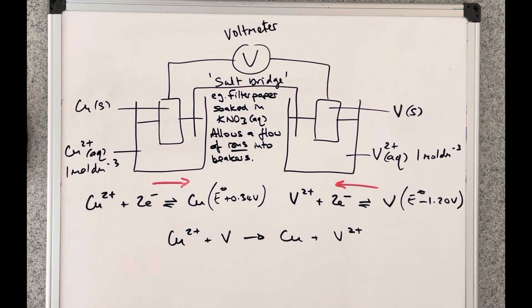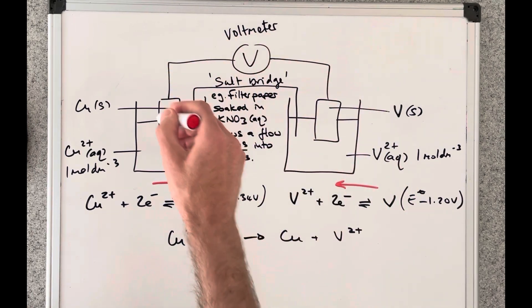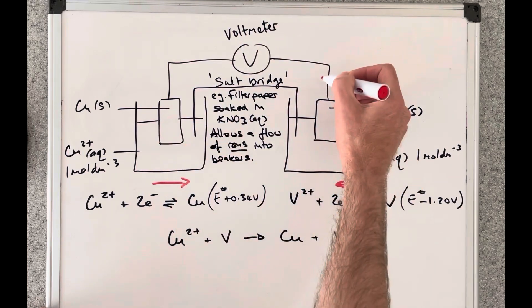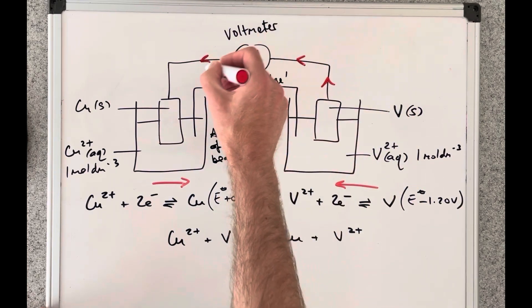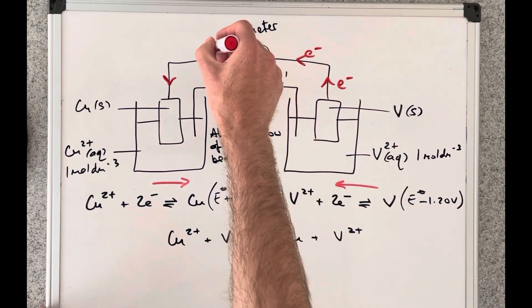So if we think about the electrons they're going to be traveling this way around the circuit because the copper 2 plus ions are pulling the electrons around. So we can draw some arrows on here to show the electron flow. I'll just put some E minuses on there.